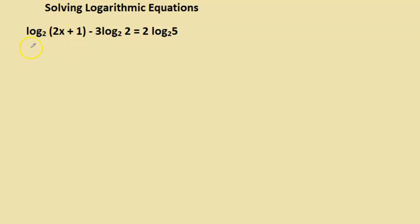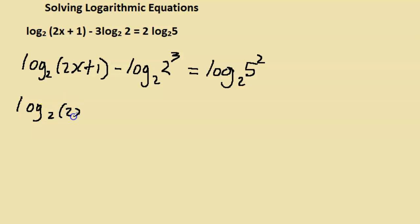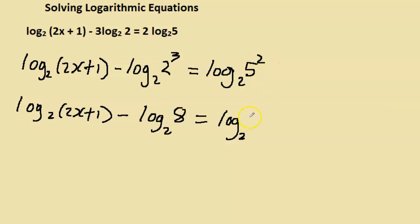Here's another problem. Before consolidating, we don't want any coefficients. Rewriting: log base 2 of (2x plus 1) minus log base 2 of a number squared. Moving the 2 as a power gives log base 2 of (2x plus 1) minus log base 2 of 2 cubed — which is 8. Likewise, the other coefficient moves to give log base 2 of 5 squared, which is 25.